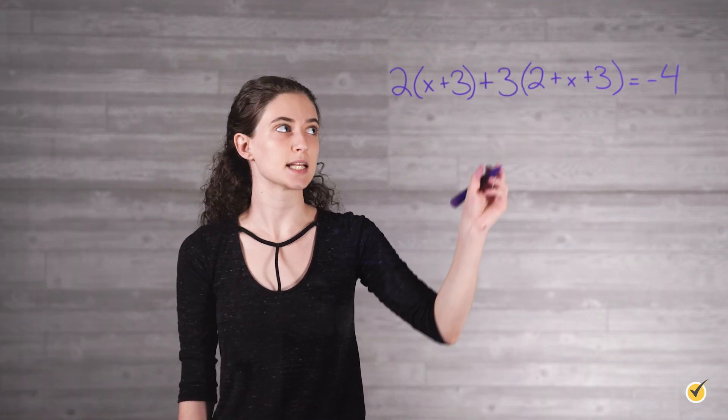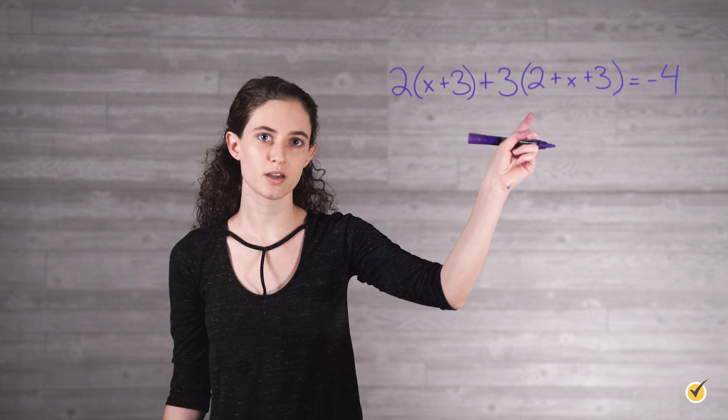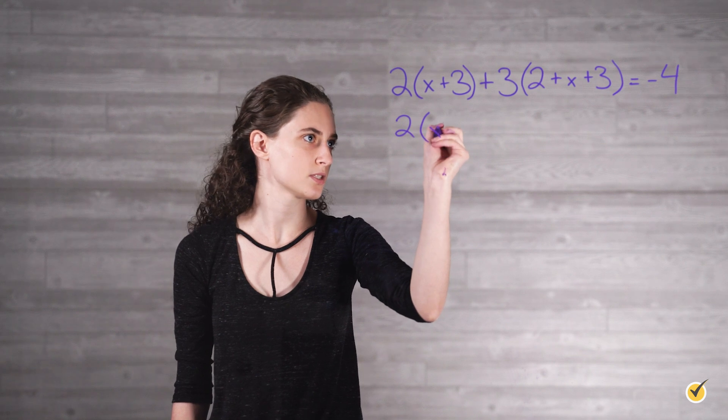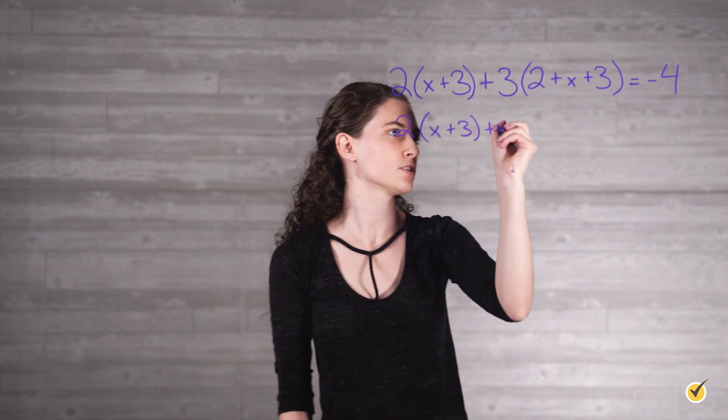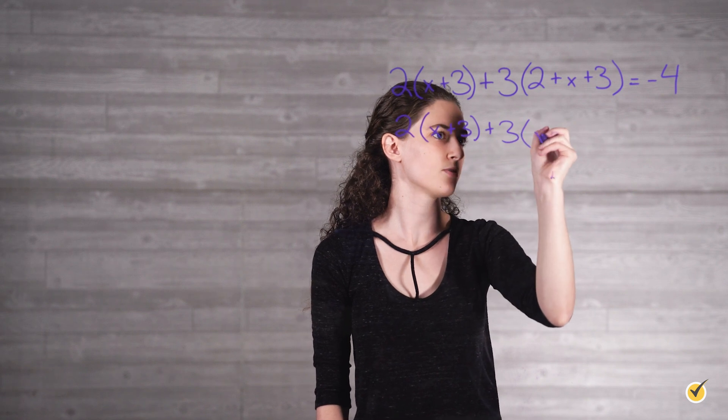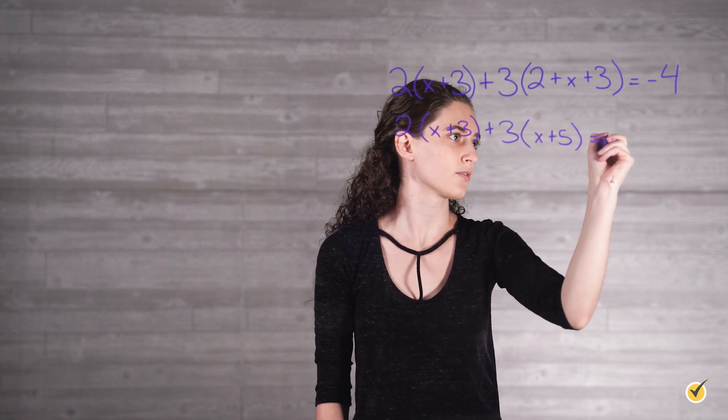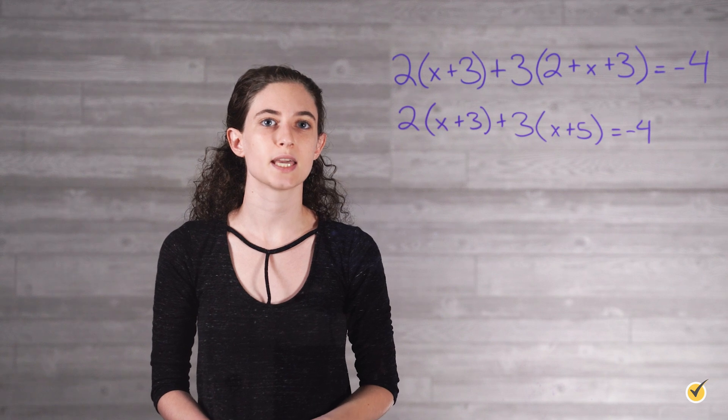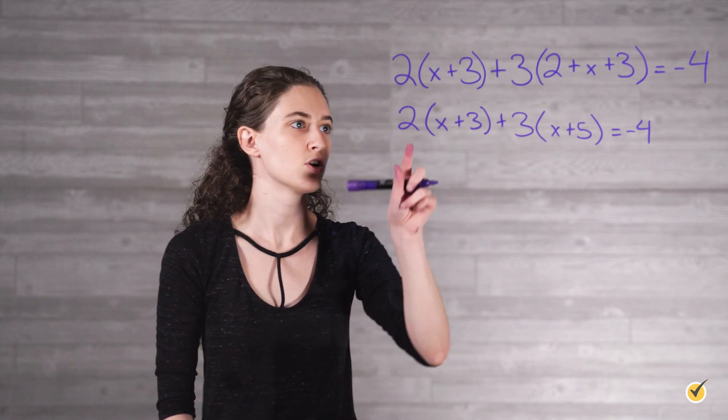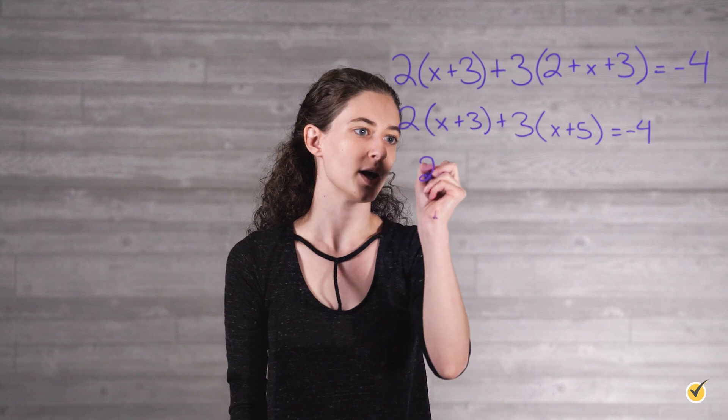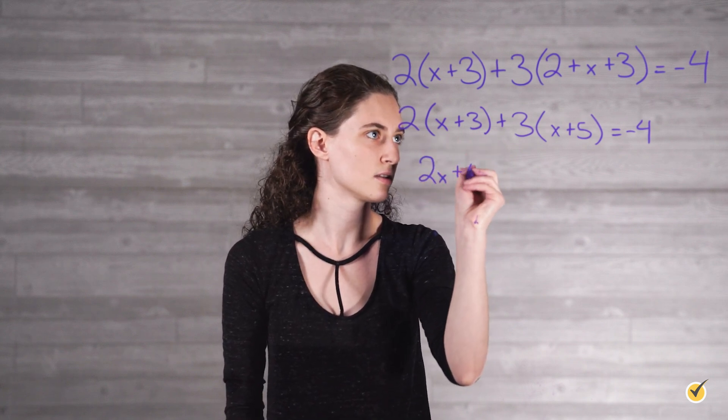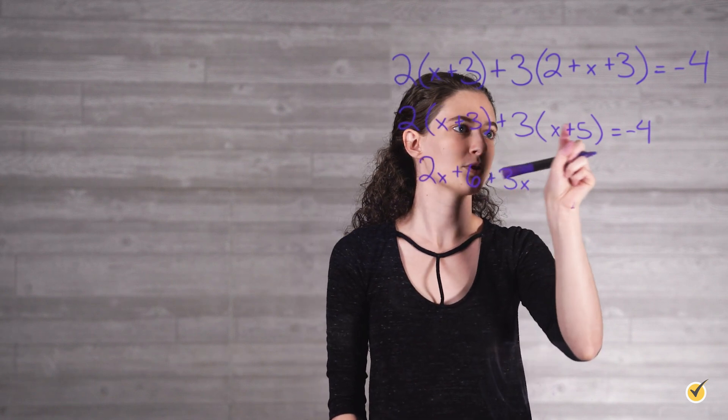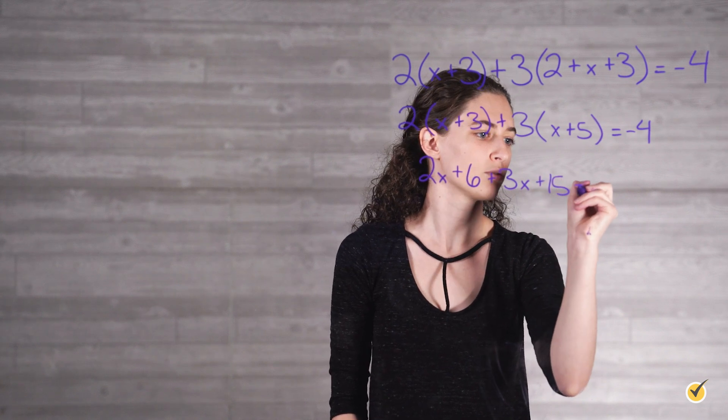The 2 and the 3 in the second set of parentheses are like terms, so we can combine them. Doing so gives us 2 times (x plus 3) plus 3 times (x plus 5) equals negative 4. Now we can carry out the multiplications that are implied by the parentheses, distributing the outer 2 and 3 accordingly. 2 times x is 2x plus 2 times 3 is 6 plus 3 times x is 3x plus 3 times 5 is 15 equals negative 4.